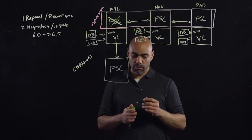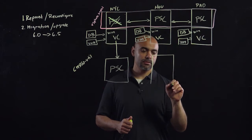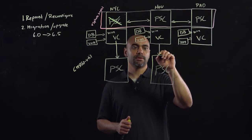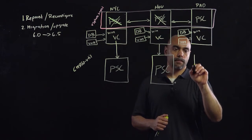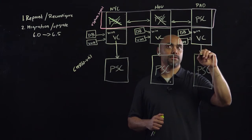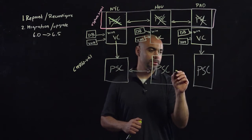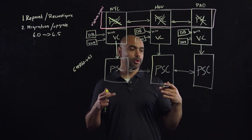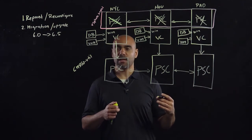We will do this for every site that we have. So we're going to deploy a new platform services controller, repoint and then reconfigure. Deploy another one here, repoint and reconfigure. PSCs replicate bidirectionally. So now we are external, in a supported deployment model that will allow us to continue on with our upgrade or migration.